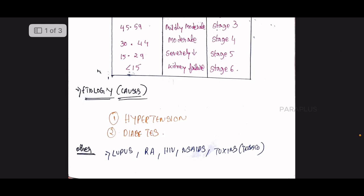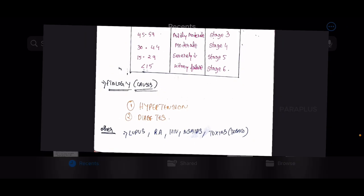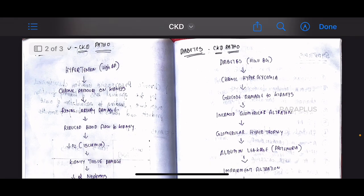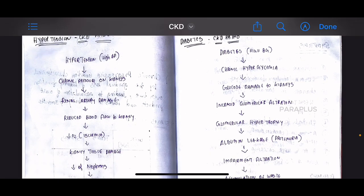The etiology of CKD has two main culprits causing its progression: hypertension and diabetes. Other causes include lupus, HIV, parasitic infections, toxins, and NSAIDs.